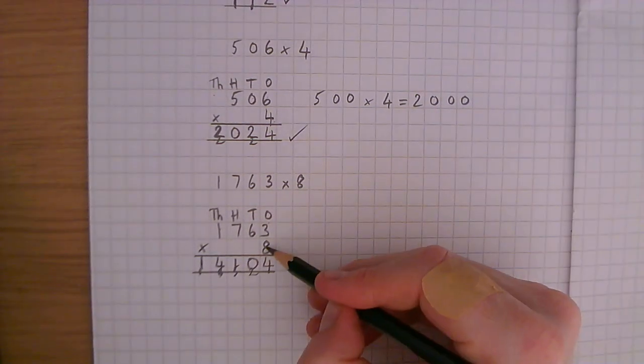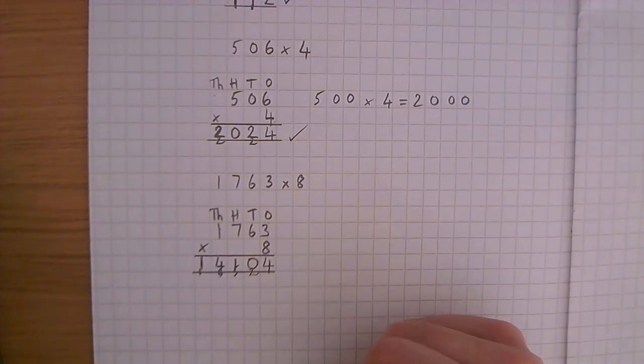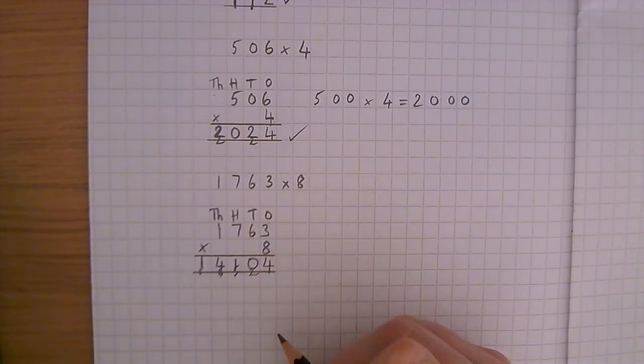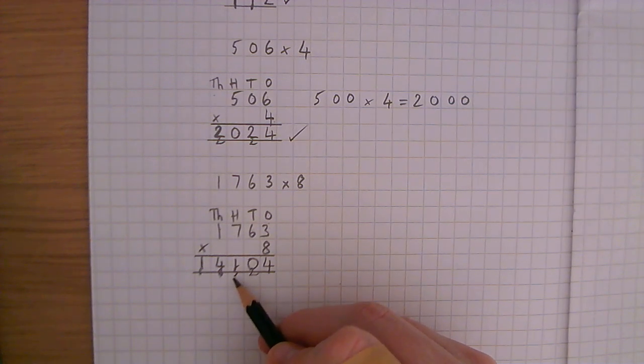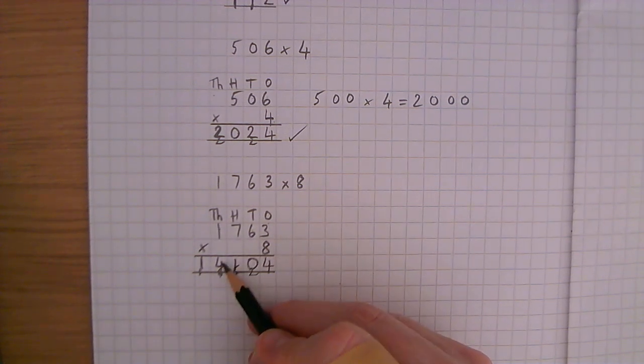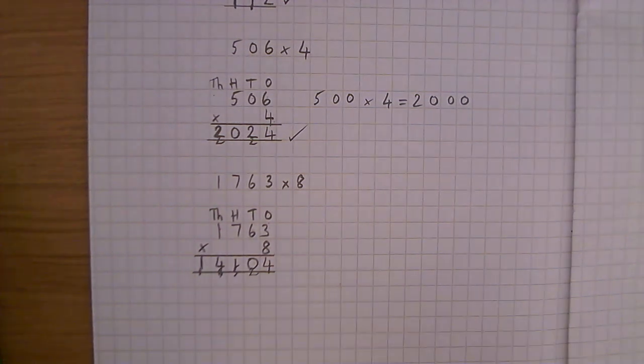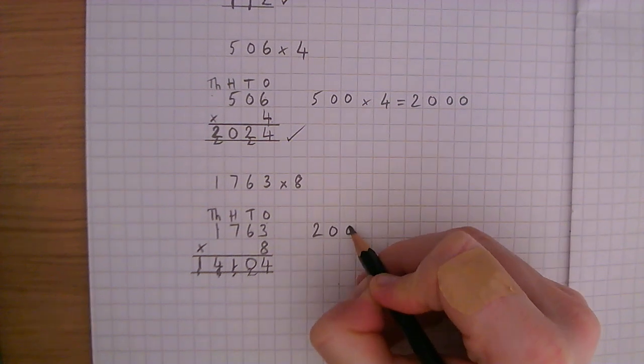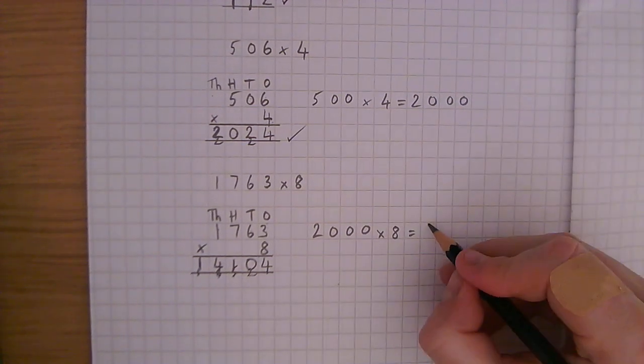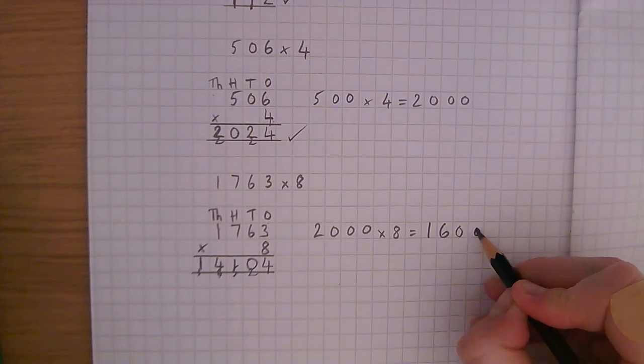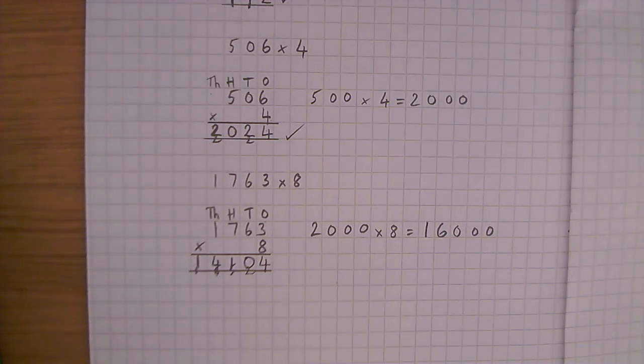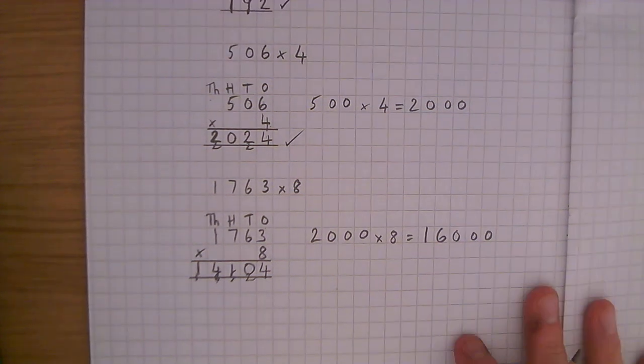Quick recap. 8 times 3 is 24. 8 times 6 is 48. Add the 2, 50. 8 times 7 is 56. Add the 5 is 61. 8 times 1 is 8. Add the 6 is 14. There's nothing left to do, so the 1 goes there. Let's see if it looks right. 1,763 to the nearest 1,000 is 2,000. 2,000 times 8, 2 times 8 is 16. Multiply the answer by 1,000 will give 16,000. So it looks like the answer is approximately correct. So that's how we do short multiplication.